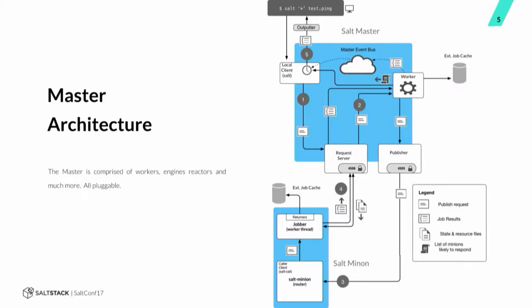We've got the request server interface, then worker processes behind it, then the event bus process. The event bus itself is just a process listening on two local sockets. One of those local sockets is a push interface where we can say, hey event bus, please fire this event for me. The other is where subscribers attach to the event bus and wait for events to come through. The local client subscribed to the event bus before it sent anything down. We found that Salt was too fast for Salt — we would send a request, the worker would validate it, send the command to the publisher to run on the minion, and by the time the local client attached to the event bus to listen, the minion had already responded and it was done.